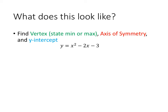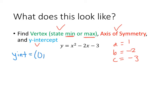Let's work through an example. We want to find the vertex, axis of symmetry, y-intercept, and whether we have a minimum or maximum. First, I'll identify the coefficients: a = 1, b = -2, and c = -3. Right away I know the y-intercept is the ordered pair (0, -3). Remember, for an intercept one of the values is always 0.